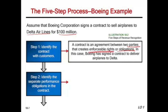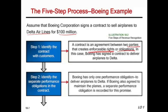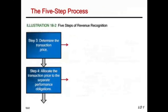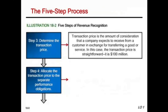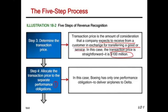Step two — identify the separate performance obligations: there is only one obligation, to deliver airplanes to Delta. Now, if Boeing also agreed to maintain the planes, a separate performance obligation would be recorded for that promise. But here we have only one performance obligation — selling the planes. Step three — determine the transaction price: the transaction price is the amount of consideration the company expects to receive in exchange for transferring goods or services. Here, that's $100 million.